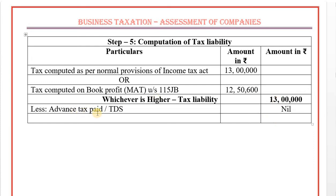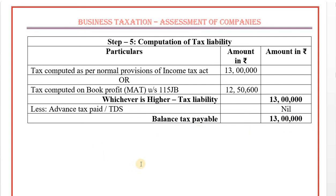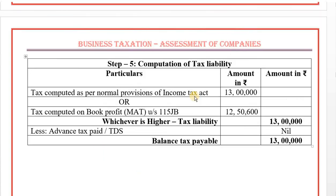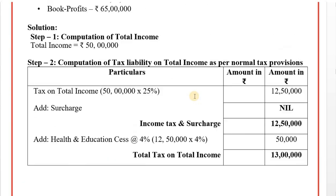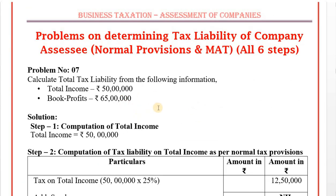Step 6: from this, advance tax paid and tax deducted at source (TDS) needs to be deducted — less. The balance tax payable is Rs. 13,000. The balance tax payable is Rs. 13,000. Here are the 5 steps — the normal tax liability is Rs. 13,000. This is problem number seven.